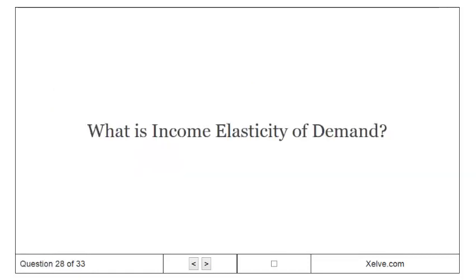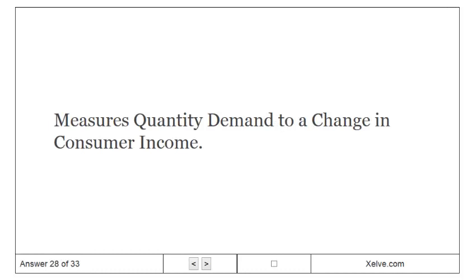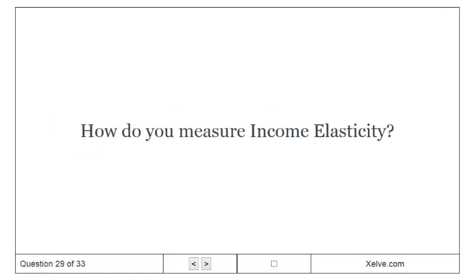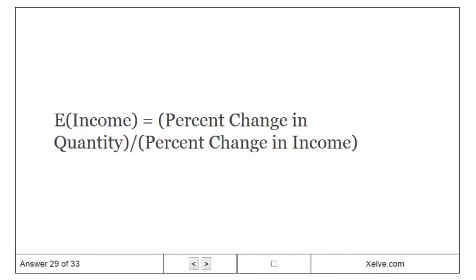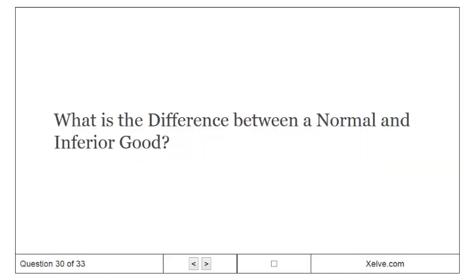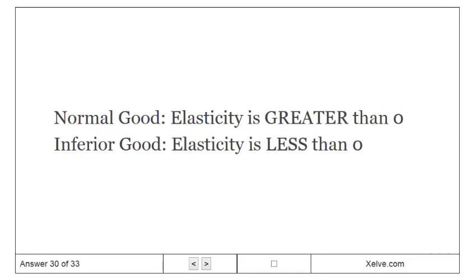What is income elasticity of demand? It measures quantity demanded in response to a change in consumer income. What is the difference between a normal and inferior good? Normal good elasticity is greater than zero; inferior good elasticity is less than zero.